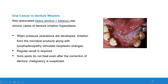Oral cancer and denture wearers. Oral cancer is associated with heavy alcohol plus tobacco use, chronic denture irritation, and hyperplasia. When pressure ulcerations develop, irritation from microbial products along with lymphadenopathy stimulates neoplastic changes. Regular recall is required. If a sore spot does not heal, malignancy should be suspected.